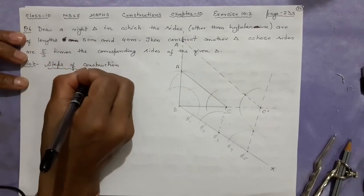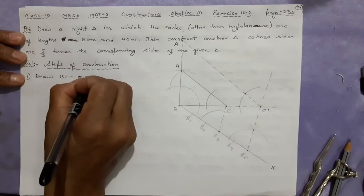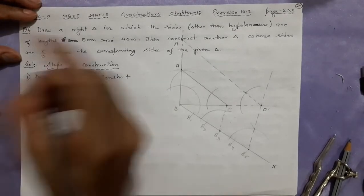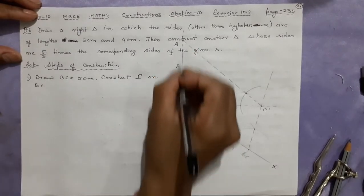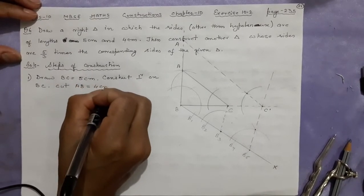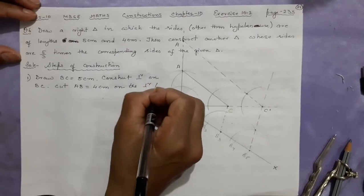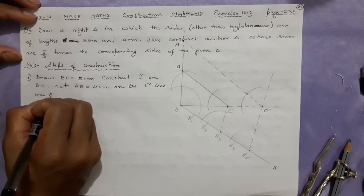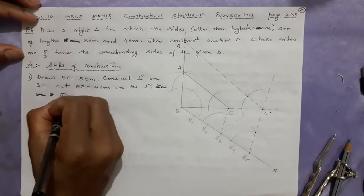Steps of Construction: Number one — draw BC equal to 5 centimeter. After that, construct a perpendicular on BC. Cut AB equal to 4 centimeter on the perpendicular line.